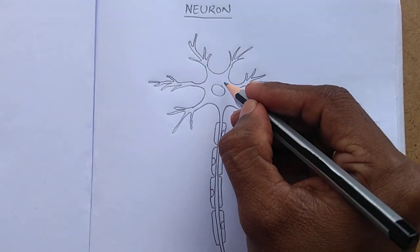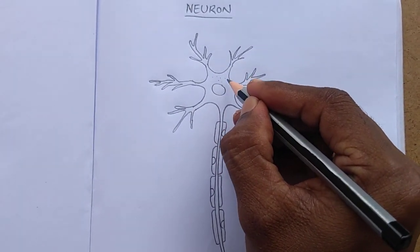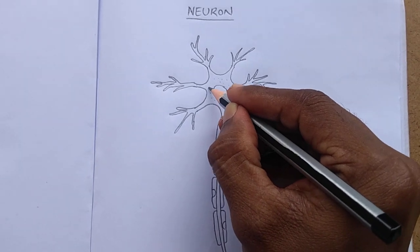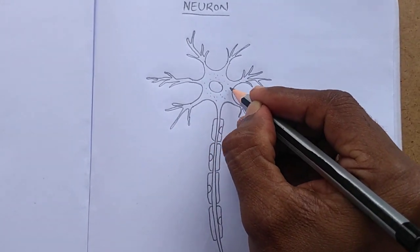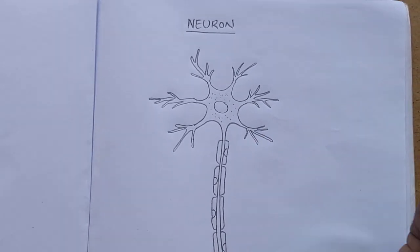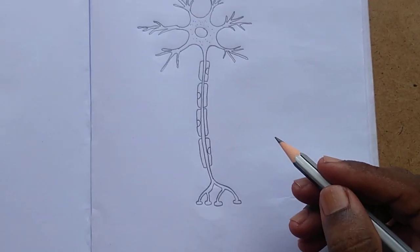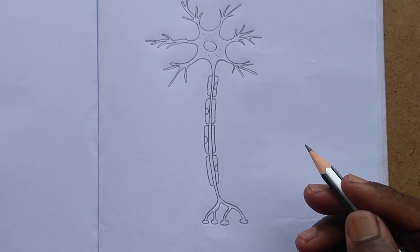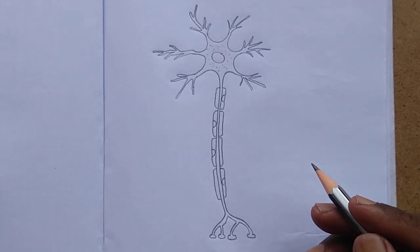Right, and inside the cyton we have to put some dots, those dots represent Nissl granules. Now the diagram is completed and we have to go for labeling.